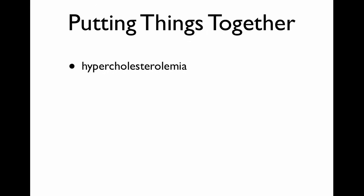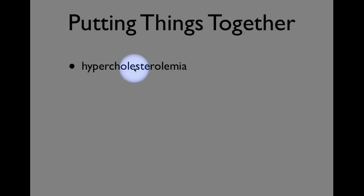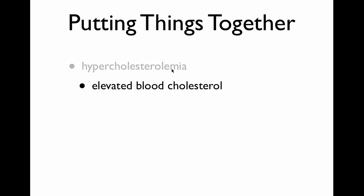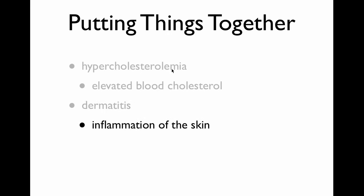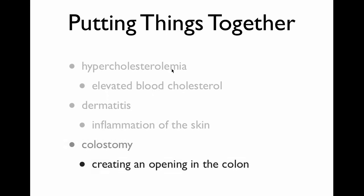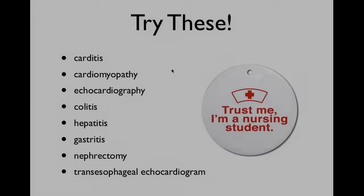When you put it all together, we can take big complicated words and break them down. Take hypercholesteremia: hyper means elevated, cholesterol is the root, and emia refers to a condition in the blood — so it's elevated blood cholesterol. Dermatitis: derm refers to the skin and itis is inflammation, so that's just an inflammation of the skin. A colostomy refers to the colon and an actual opening in the colon.